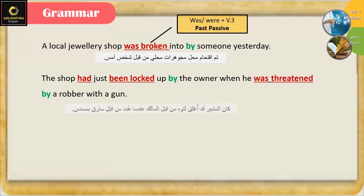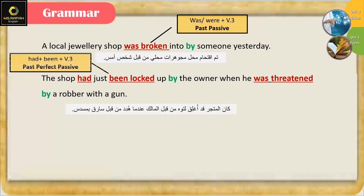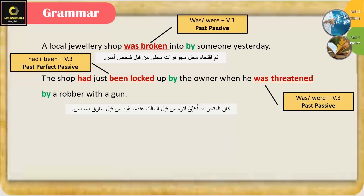'The shop had just been locked up by the owner when he was threatened by a robber with a gun.' هاد معناها ماضي تام — had been locked — past perfect passive. والباي بدل على أن الجملة مبني للمجهول. 'Was threatened' — was زائد الفعل بالتصريف الثالث — past passive.